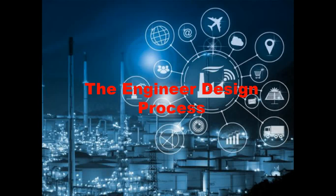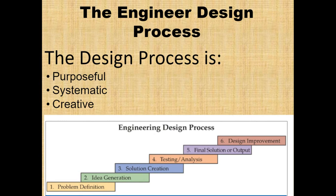Welcome to the engineering design process. The design process is meant to be purposeful, systematic, and creative. The engineering design process commonly has six steps, but you may even see slides that have eight or nine steps — they're just expanding on the ideas. Step one is problem definition, step two is idea generation, step three is solution creation, step four is testing and analysis, step five is final solution or output, and step six is design improvement.